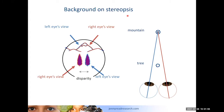What I mean by stereopsis is a perception of depth or distance that depends on the different views of the world from the two eyes. For example, if you're looking at a mountain and fixating it, it projects to identical locations in the two eyes. But a nearer object like a tree would appear to the left of the mountain from the right eye, and to the right of the mountain from the left eye — this offset or disparity can be interpreted by your brain as a cue telling you that the tree is physically in front of the mountain.